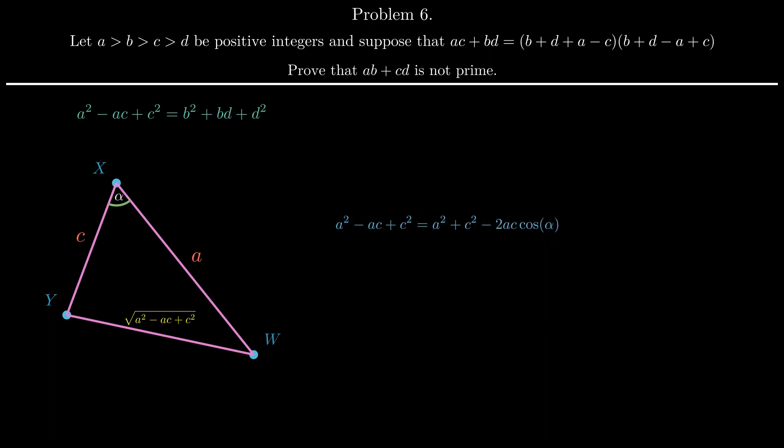Since ac is not 0, we have that cosine alpha is 1 half, which means that alpha is 60 degrees, as alpha has to be less than 180 and greater than zero, so 60 degrees is the only option we have here. So we end up with a nice angle at x. Let's see how this will come in handy later.